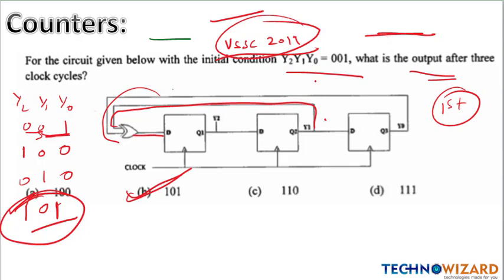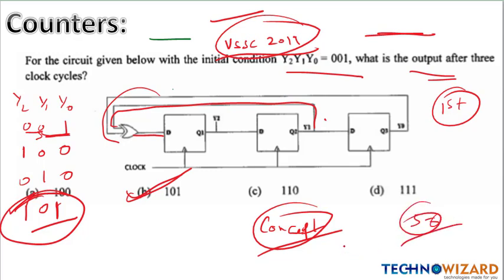That covers everything related to sequential circuits. This was a concept revision in a very short time — five to six minutes — to help you remember till your exam. The basic things to remember are: truth table, excitation table, characteristic equations, binary shift registers providing time delay and used in data conversion, and counter-related questions. If you like the video, please share it and don't forget to subscribe the channel to get further exam updates. All the best!